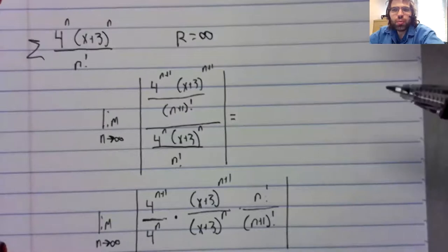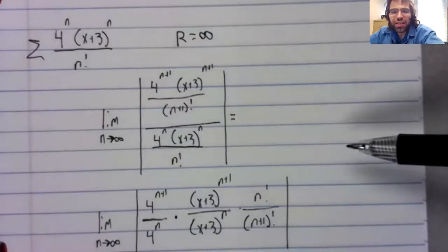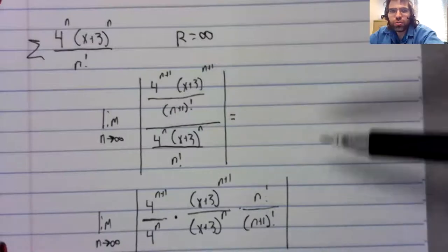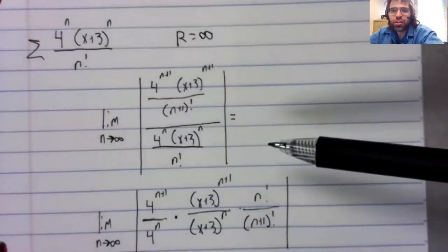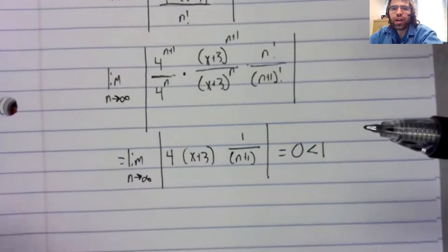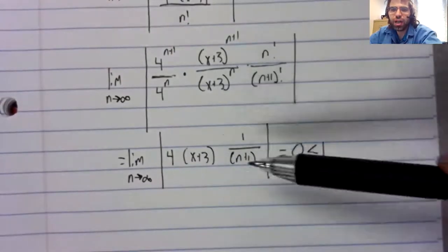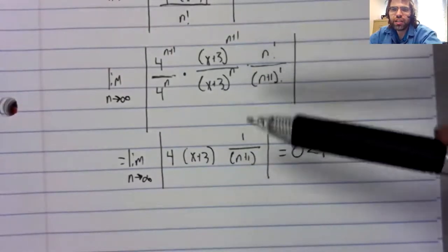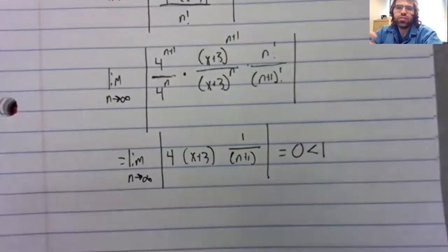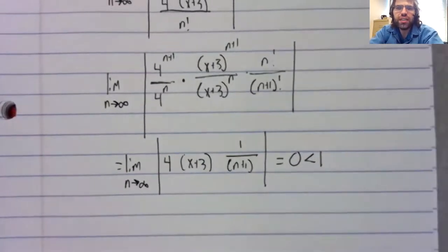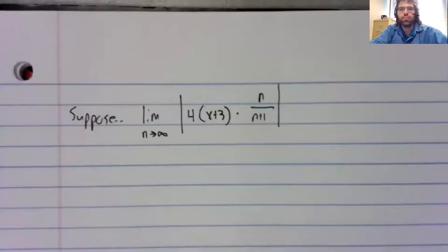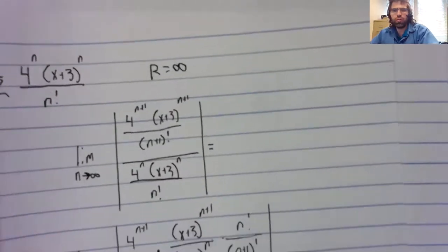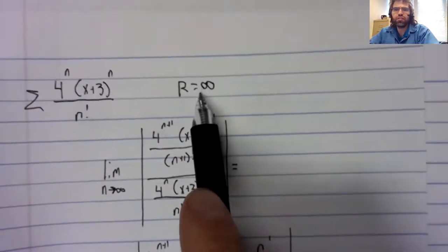I think that was probably a mistake. You should probably expect when you do a problem like this on the test to have a finite radius of convergence. So let's tweak this problem a little. So new problem. We solve this. The radius is infinity.